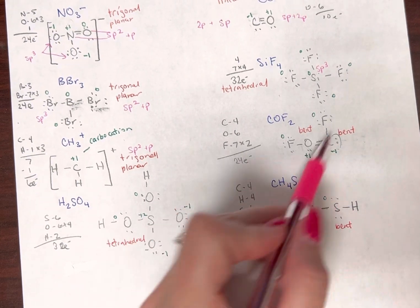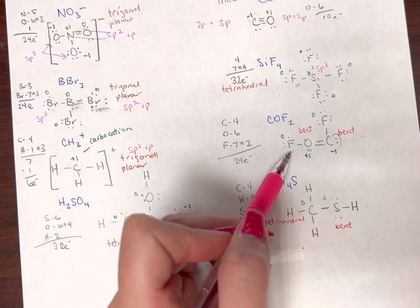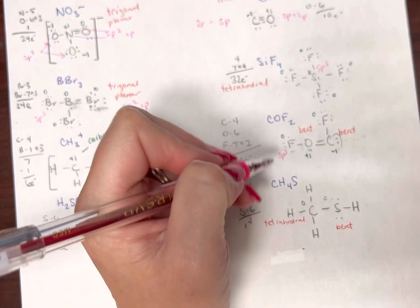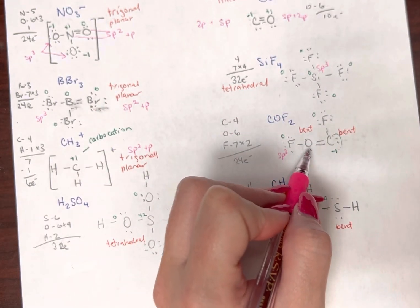And now this thing's all crazy. So let's look at it. This fluorine has one, two, three friends. So this is sp3. This oxygen has one, two, three friends. It's sp2.